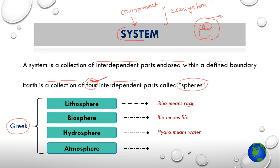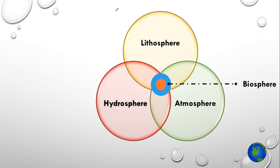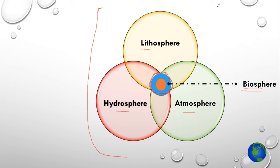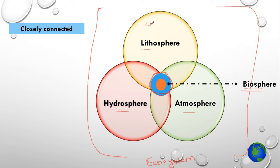In this session we are going to cover just the overview of each sphere. Our planet earth is a system and it has some interconnected parts. Lithosphere, hydrosphere, and atmosphere are the basic interconnected parts, and the portion which is common in these three spheres is known as biosphere. These four major spheres are enclosed within a boundary and this system is called ecosystem. Now because these four spheres are closely connected to each other, a change in one sphere will definitely result in a change in one or more spheres.